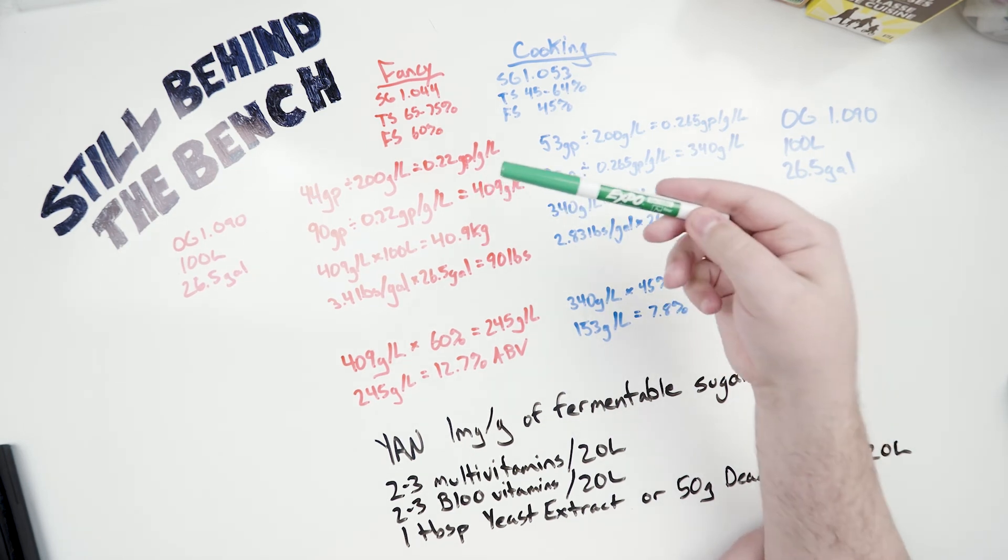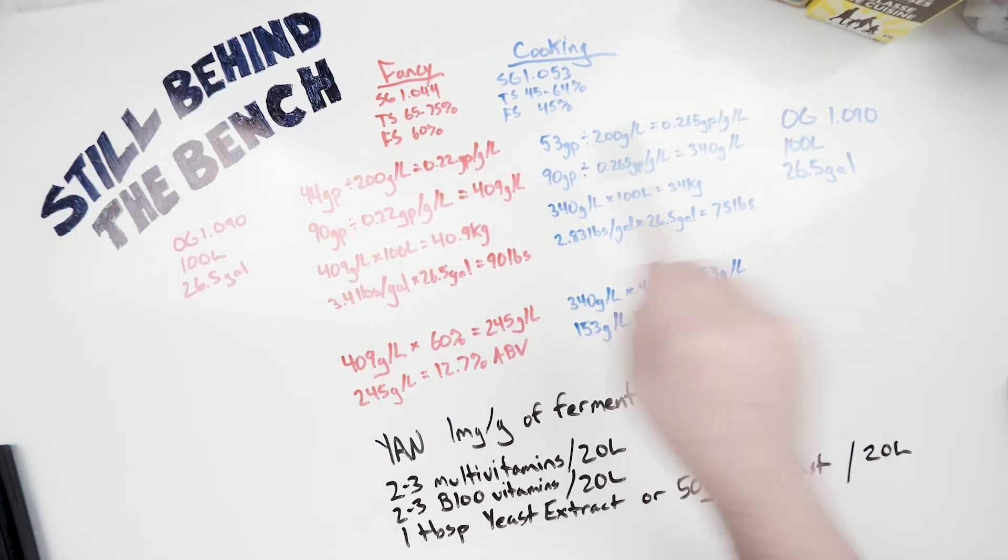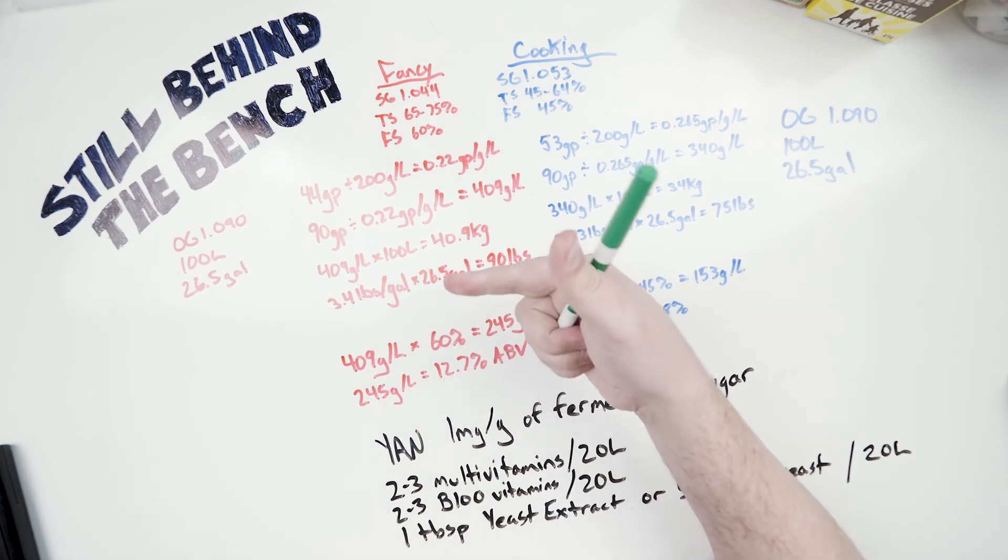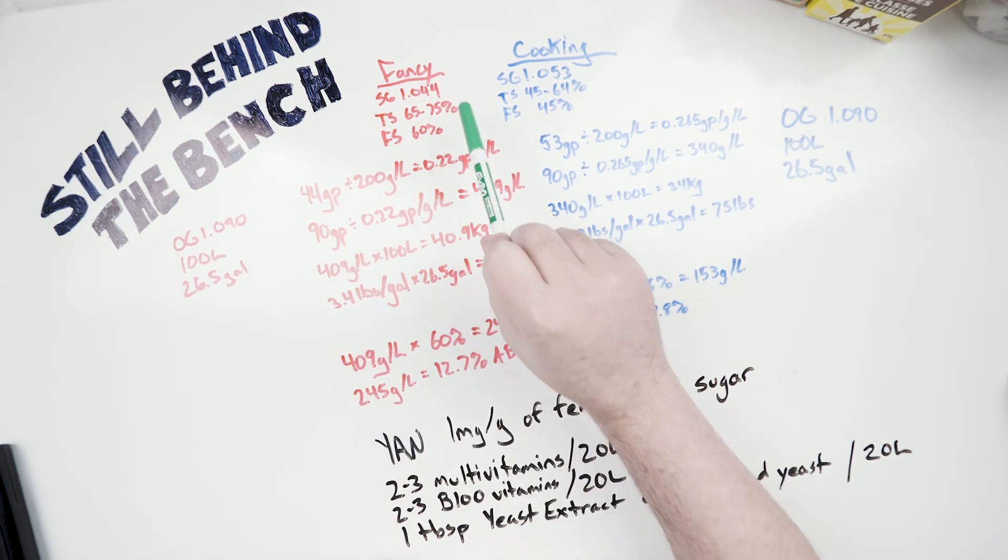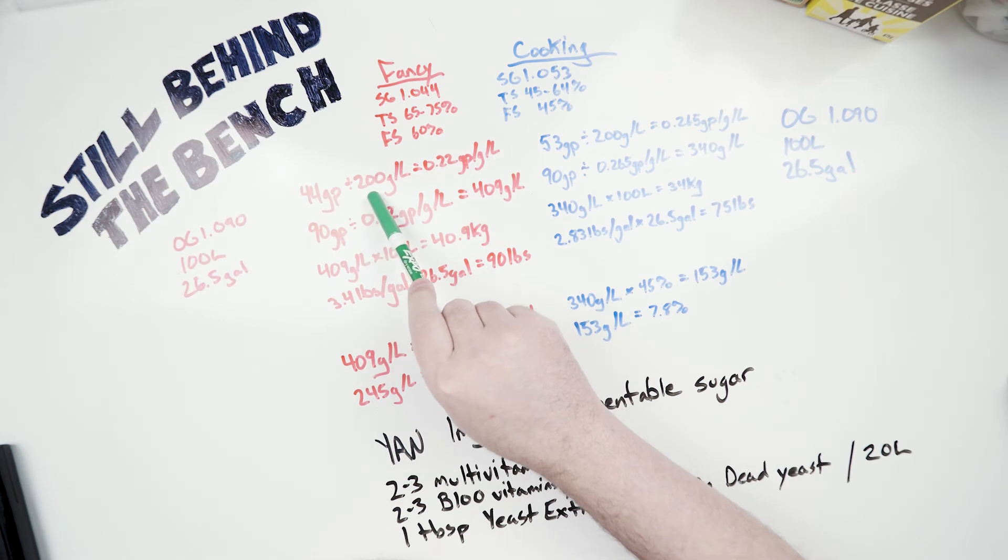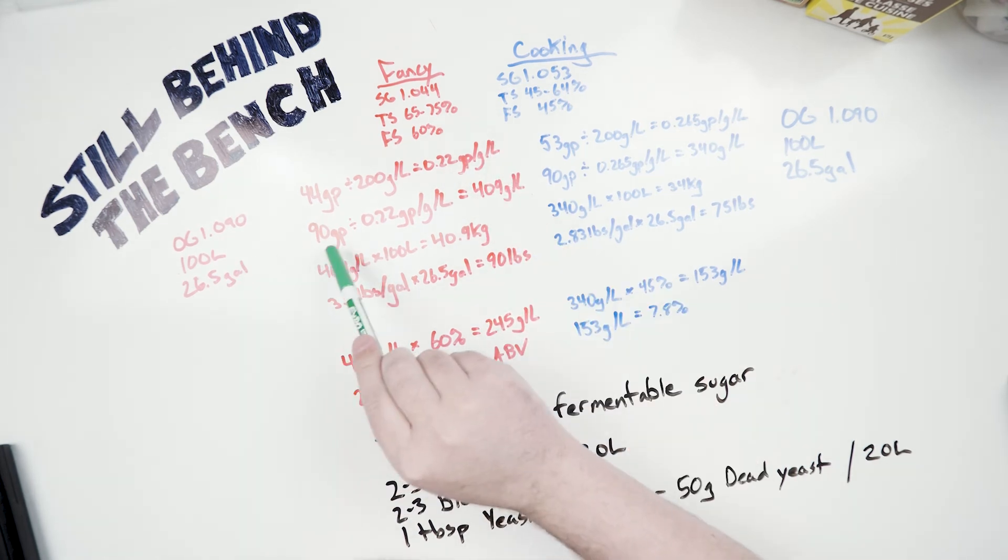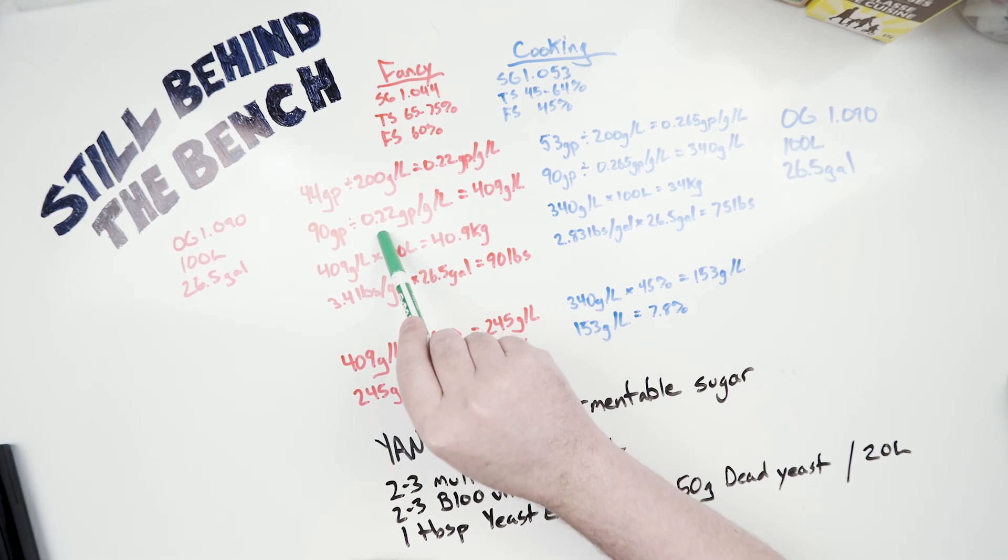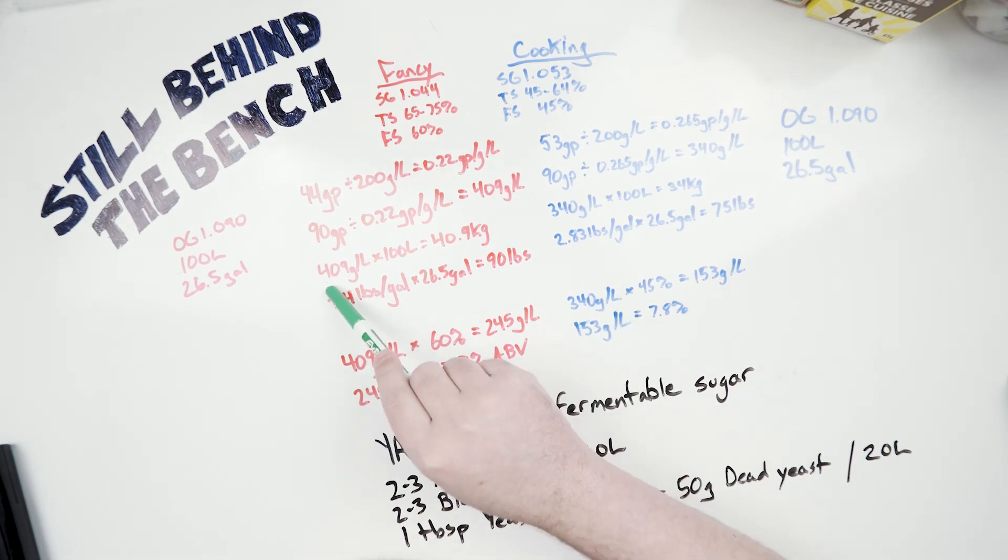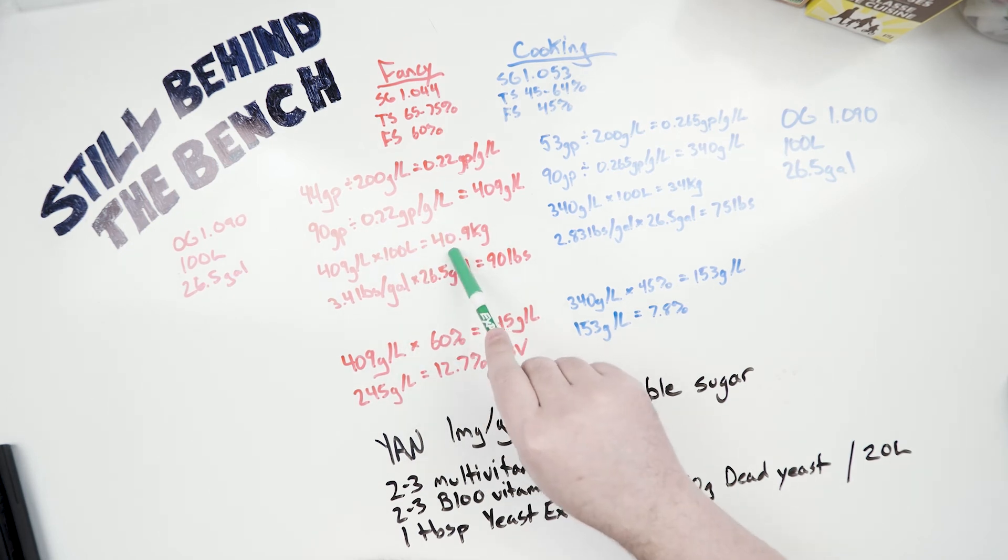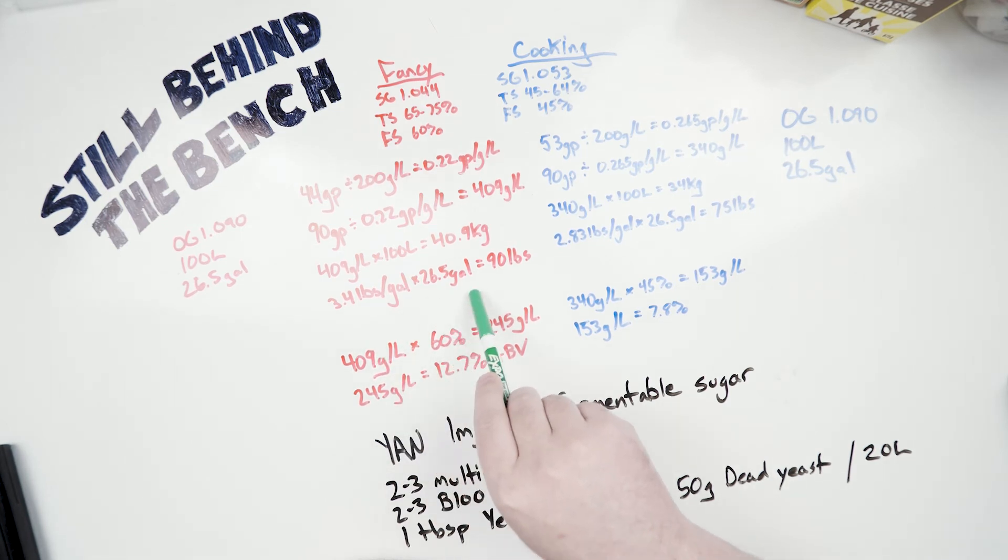So the next thing you're going to want to do is determine how many gravity points you want your original gravity to be. In my case, I chose 90 for both of them. That gives me room for nutrients and for dunder or muck without hitting what I consider the maximum of 1.150. So with my fancy, we had 44 gravity points from 200 grams per liter. That gives us 0.22 gravity points for every gram per liter. I know I want 90 gravity points, so I divided by that 0.22 gravity points per gram per liter. That gives me 409 grams per liter.